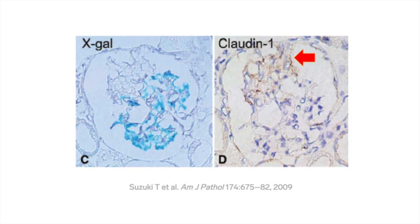If not podocytes, then what is the cell of origin? Cell fate mapping is often complemented by cell markers detected by other techniques. Suzuki and colleagues used immunohistochemistry to help determine the cell types and their distribution. The figure shows a segmental collapsing lesion from a P21-deficient mouse, where blue staining demarcates the distribution of podocytes in one part of the tuft, and absence of staining denotes loss of podocytes in the segmental lesion. An arrow points to claudin-1 expression localized to the area of segmental collapse. Claudin-1 is a cell marker for parietal epithelial cells, or PECs. The cumulative findings are consistent with the notion that PECs comprise the epithelial component of the collapsing lesion.